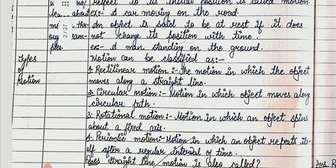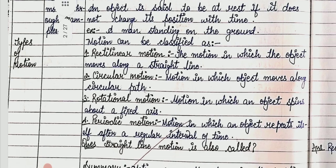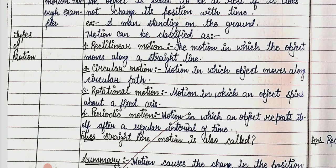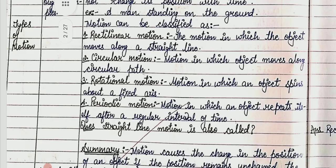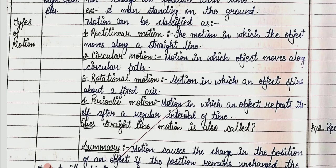Motion can be classified as: first, rectilinear motion — motion in which the object moves along a straight line; second, circular motion — motion in which the object moves along a circular path; third, rotational motion — motion in which an object spins about a fixed axis; fourth, periodic motion — motion in which an object repeats itself after a regular interval of time.